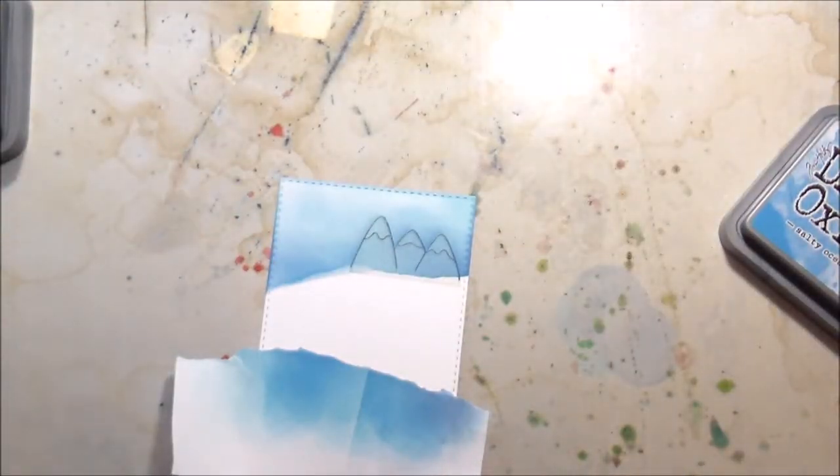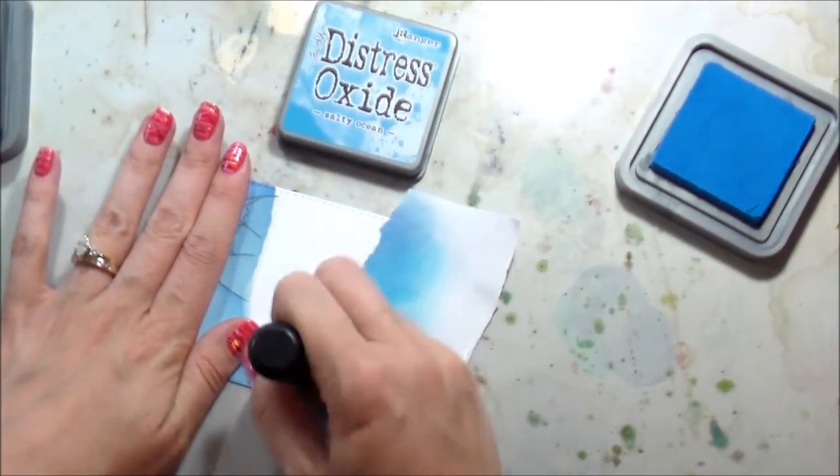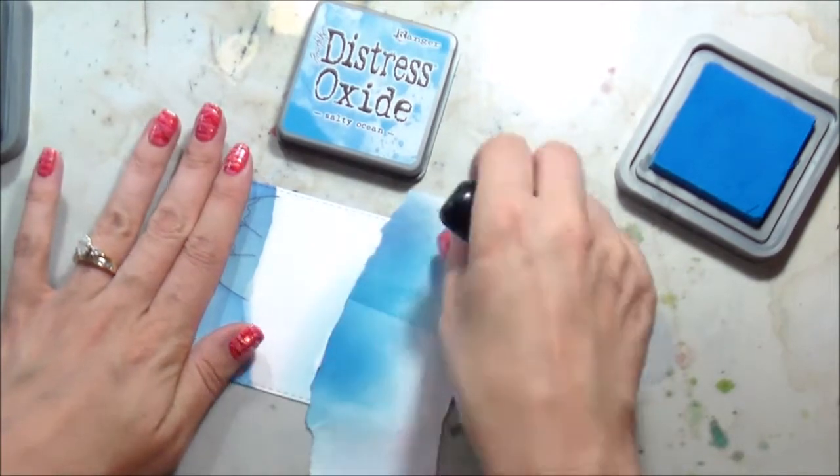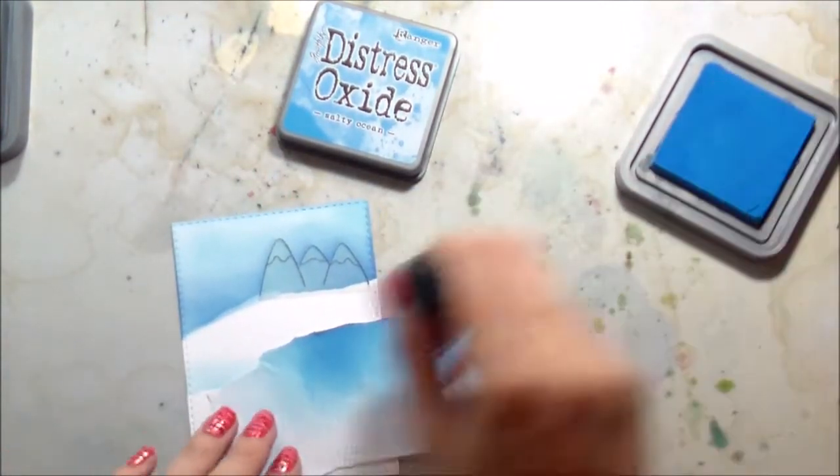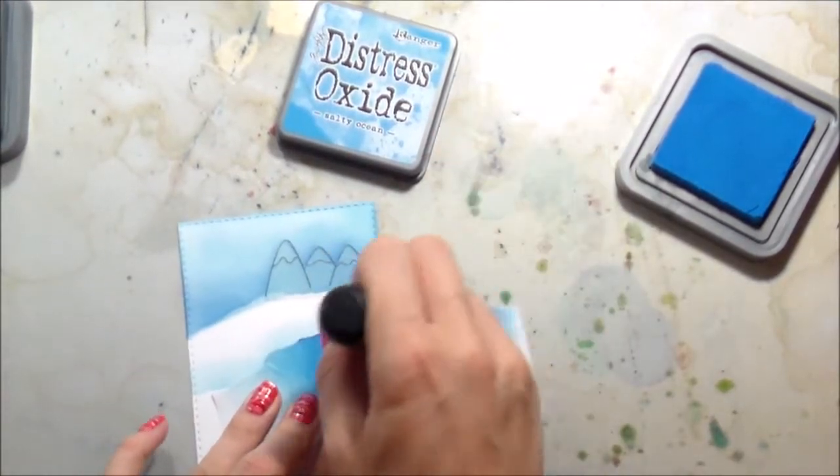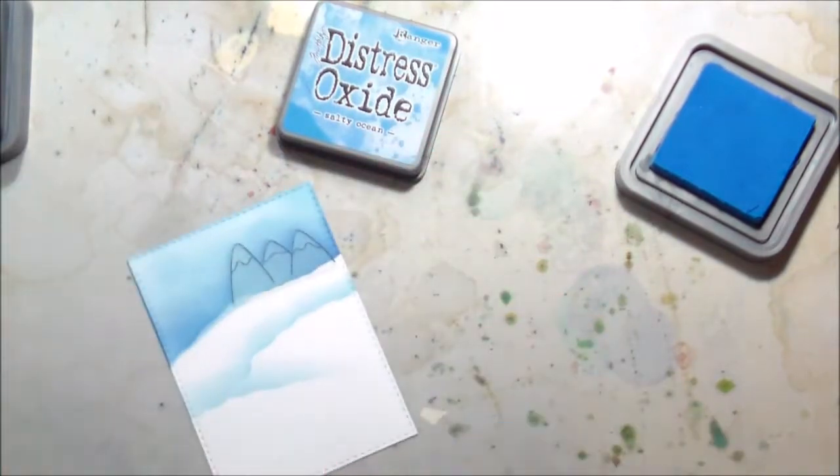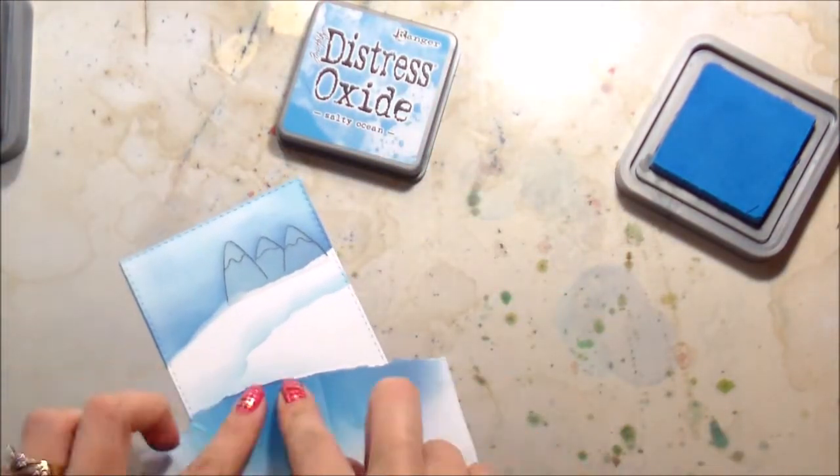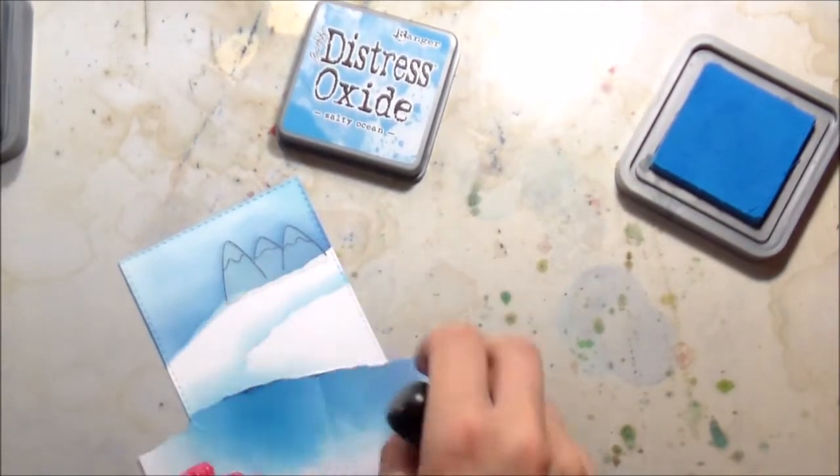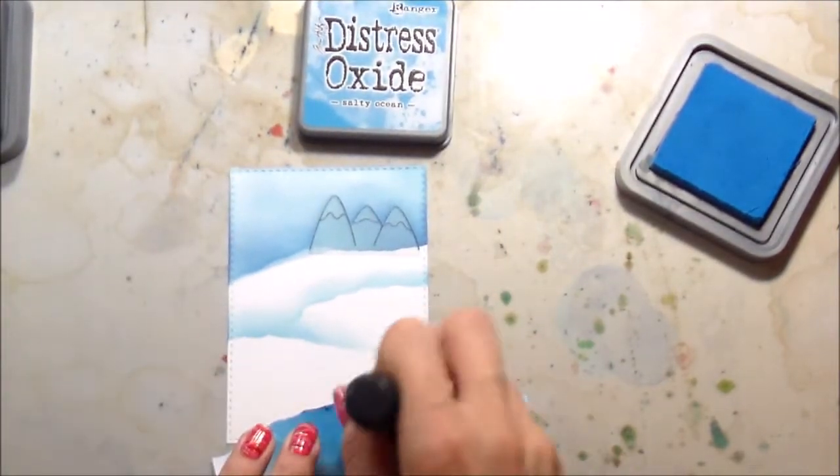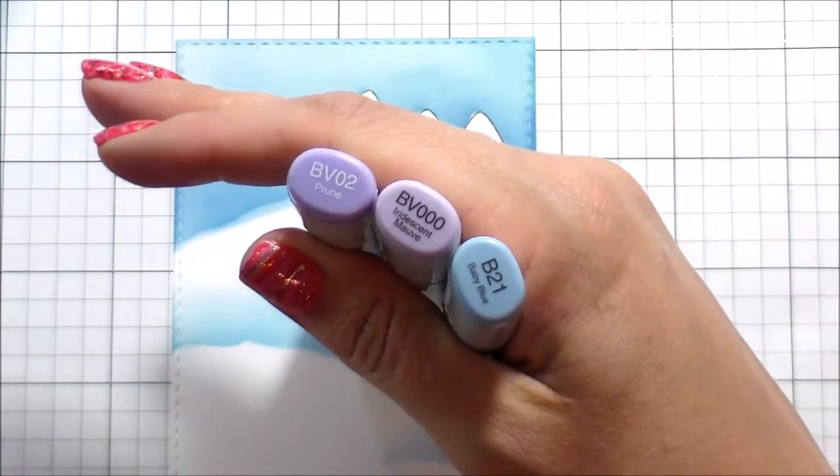When you're creating hills with distress ink or distress oxide, both will work, you're creating the shadow because it is white. All you're doing is putting in the shadows and that's going to create the top of the hill that's in front of it. I have three hills going on at this point, one in the back right in front of the mountain and then two in the front. I'm going to put a little third just so there isn't a lot of white space down at the bottom.